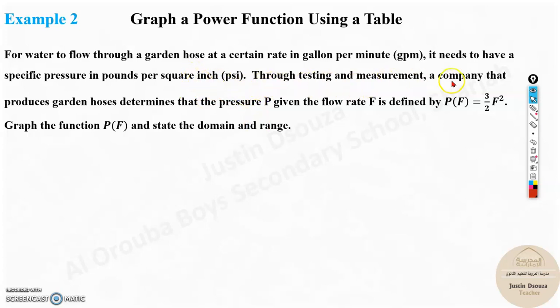Through testing and measurement, a company that produces garden hoses determines that the pressure P, given the flow rate F, is defined by this function. Graph the function P(F) and state the domain and range.